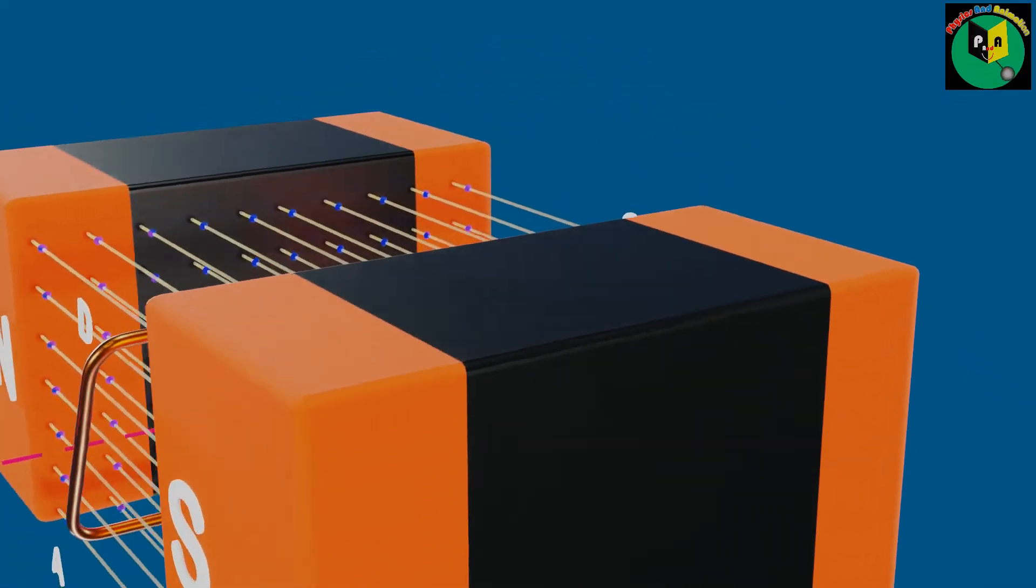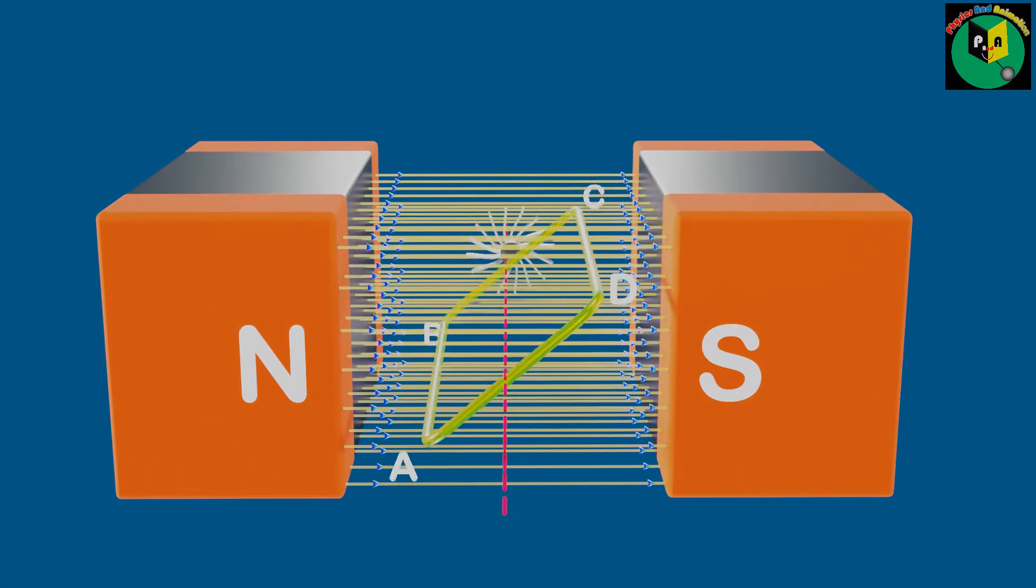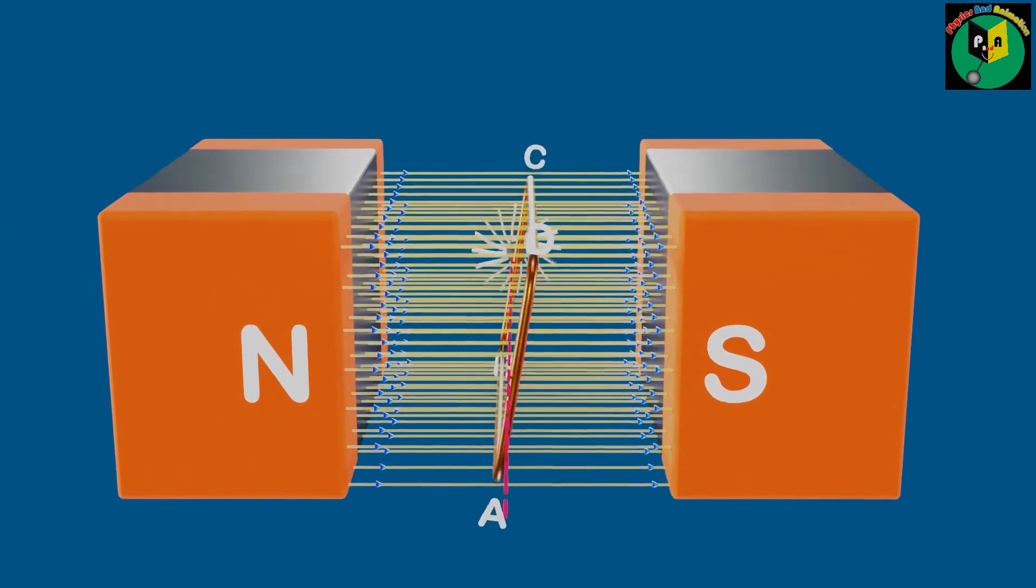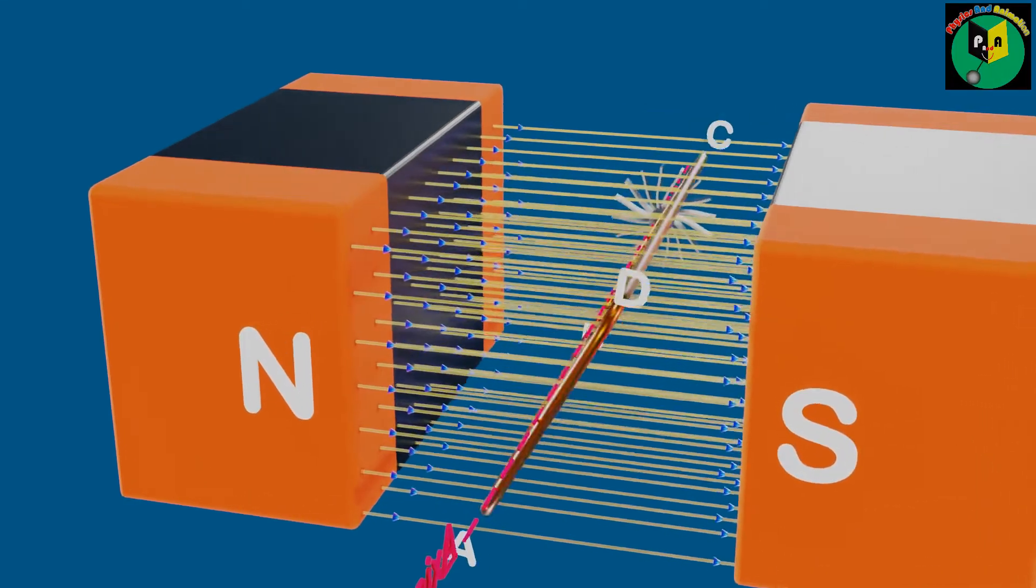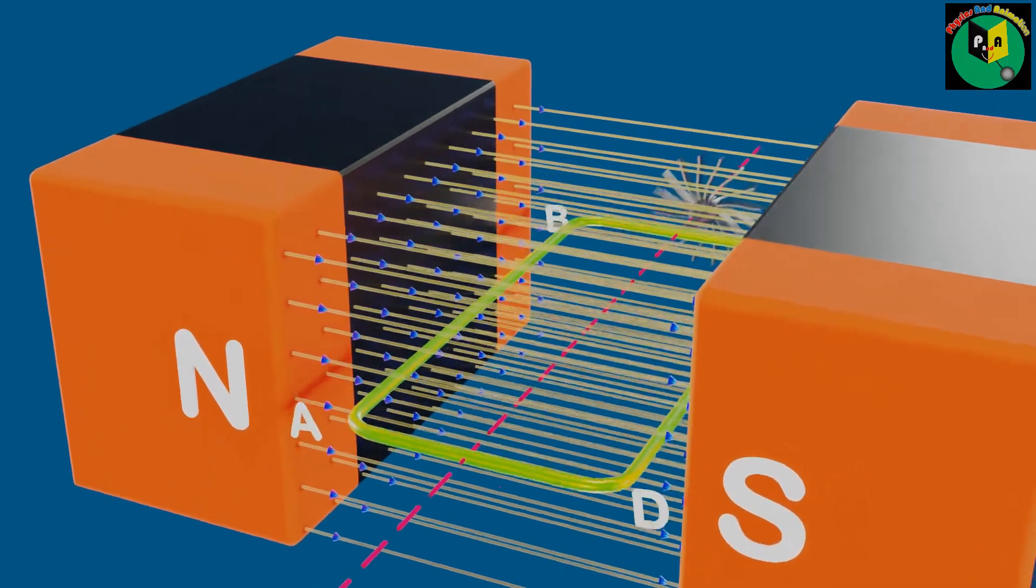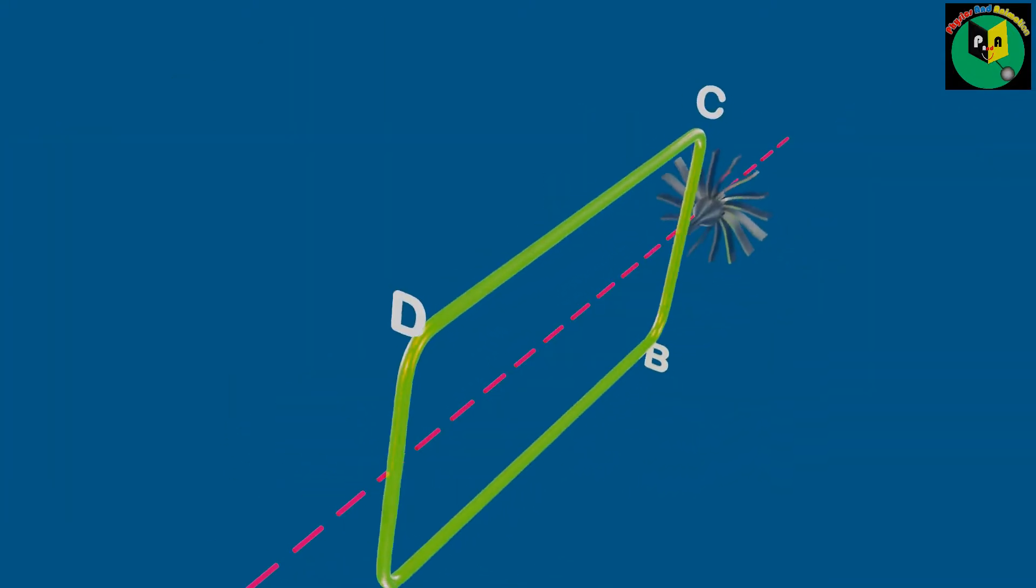Therefore, according to Faraday's law of electromagnetic induction, EMF induces in it. As it is a closed loop, due to this current flows in a coil. To find the direction of the current in the coil, observe arm AB of the coil.